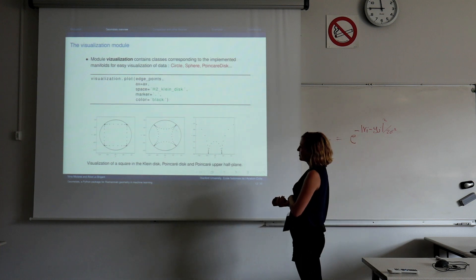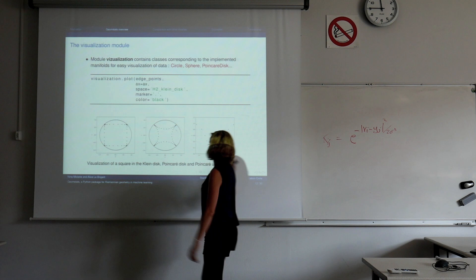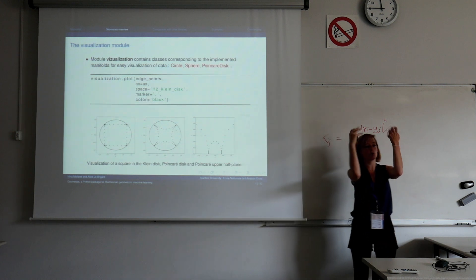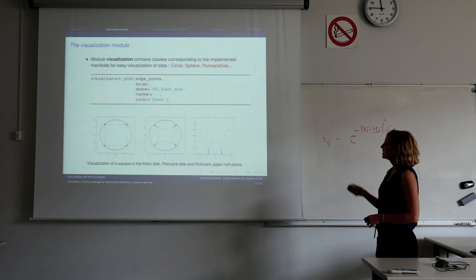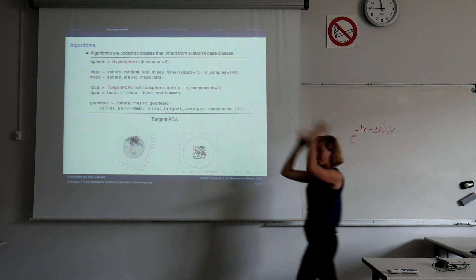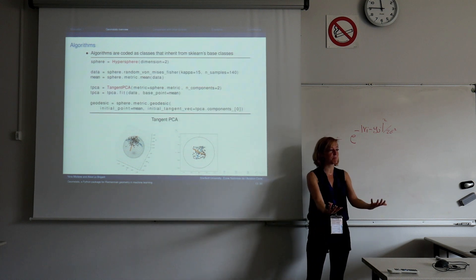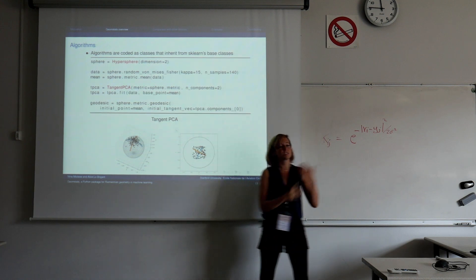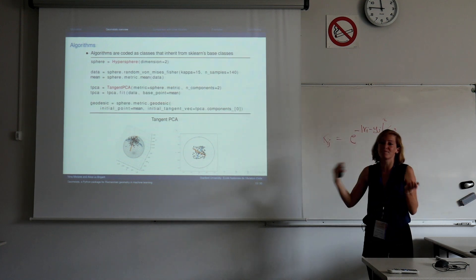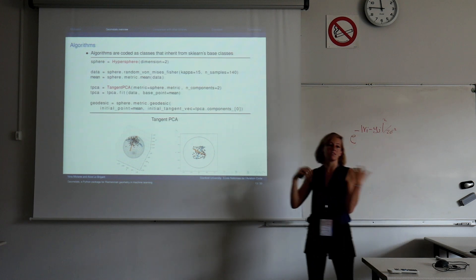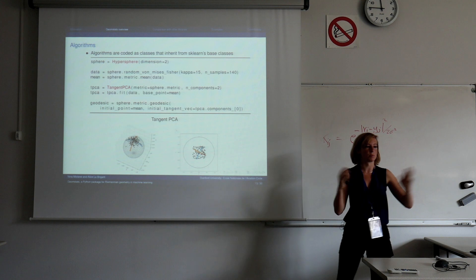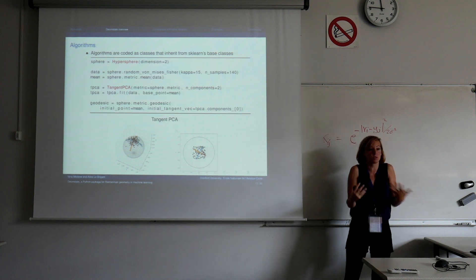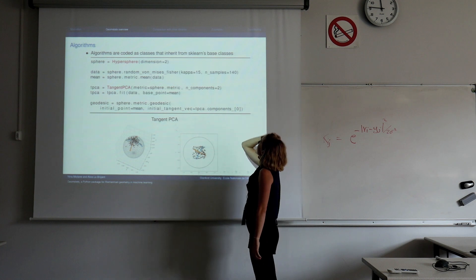We also have a visualization module for lower dimensional manifolds. For example, on the hyperbolic plane we have the Klein disk, the Poincaré disk, and the Poincaré upper half plane. Not only do you have it implemented in the package, you can also visualize it. We also have the machine learning part implemented using OOP — for that we inherit from the sklearn base class. Everybody in machine learning is used to sklearn; you do pca.fit. With GeoStat you can do tangent_pca.fit, or for a Riemannian quantization algorithm, quantization.fit — making it seamless for the machine learning community.